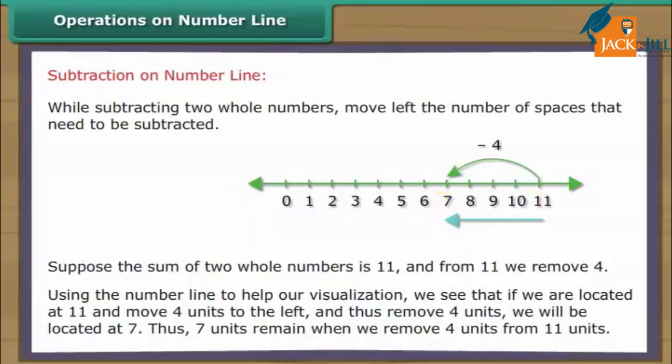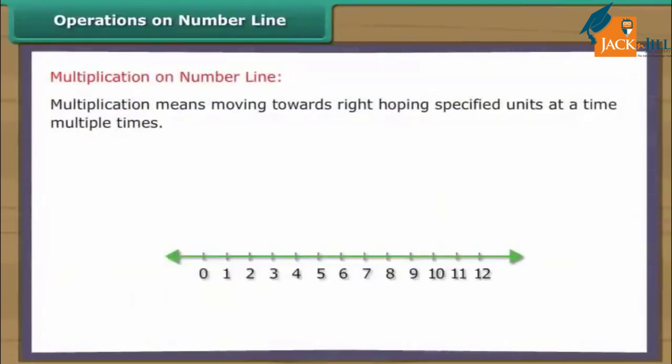Multiplication means moving towards right, hopping specified units at a time, multiple times. For example, two times five. Start from zero, move two units at a time to the right. Make five such moves. You will reach ten. So we say two times five equals ten.